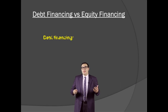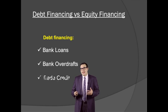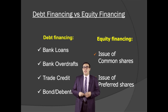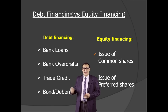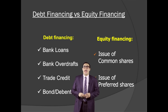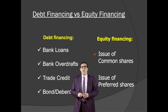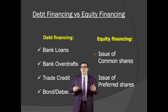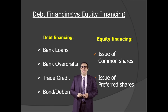Now let's compare debt financing and equity financing. In general, debt financing includes bank loans, bank overdrafts, trade credits, and bonds and debentures. Equity financing includes issue of common stock and issue of preferred stock. Let's look at every single one of them in detail.